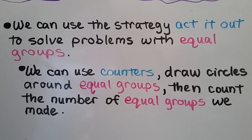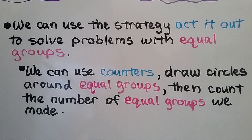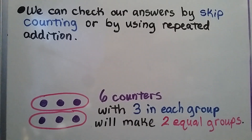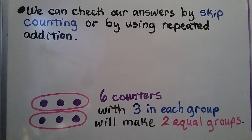We can use the strategy ACT IT OUT to solve problems with equal groups. We can use counters to draw circles around equal groups, then count the number of equal groups we made. We can check our answers by skip counting or by using repeated addition.